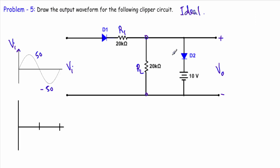We have to draw the output for this clipper circuit. Here we have two diodes D1 and D2, and we are taking the output across a load resistor of 20 kilo ohm. Across this load resistor, diode D2 and a biasing voltage of 10 volt are connected in parallel. We have to consider diodes D1 and D2 as ideal diodes, meaning when forward biased, I will replace them with a short circuit.